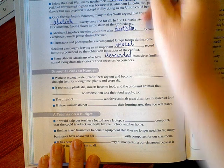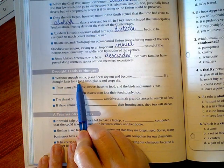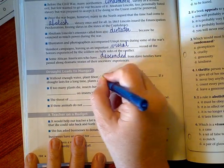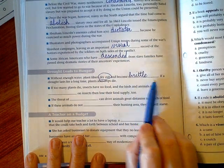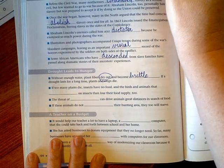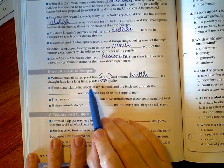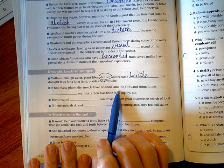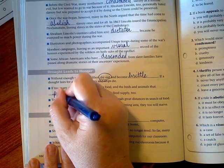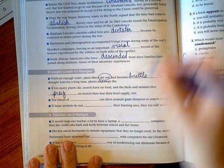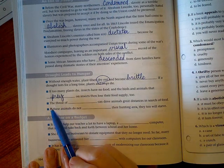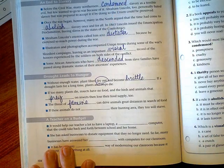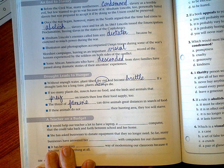Moving on. Drought leads to hunger. Without enough water, plant fibers dry out and become brittle. If a drought lasts for a long time, plants and crops die. If too many plants die, insects have no food, and the birds and animals that prey on insects then lose their food supply too. This is a vicious cycle. The threat of famine can drive animals great distances in search of food.